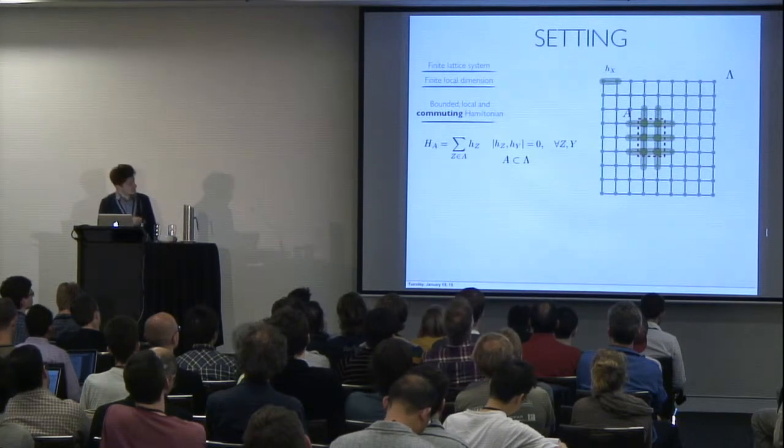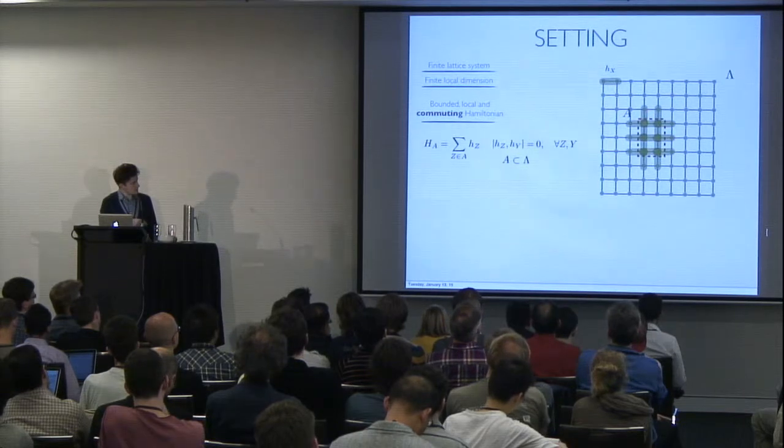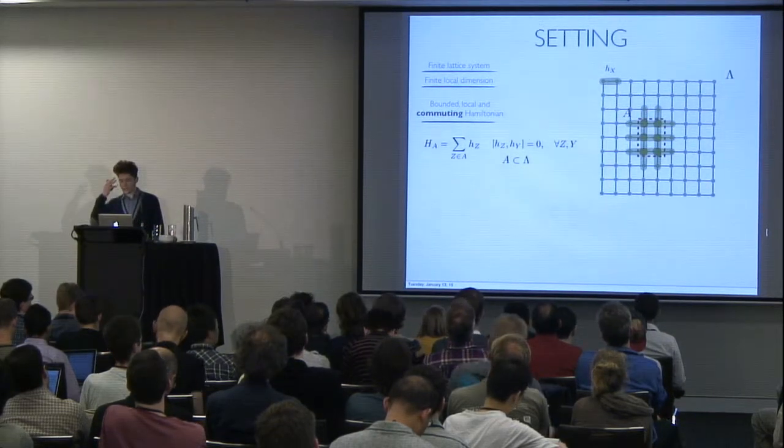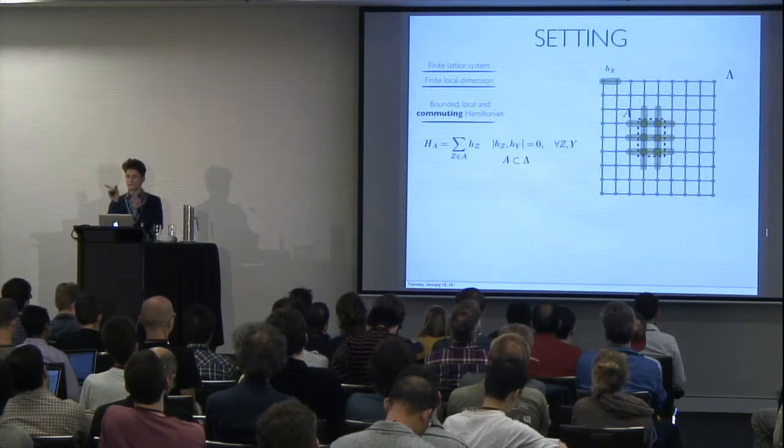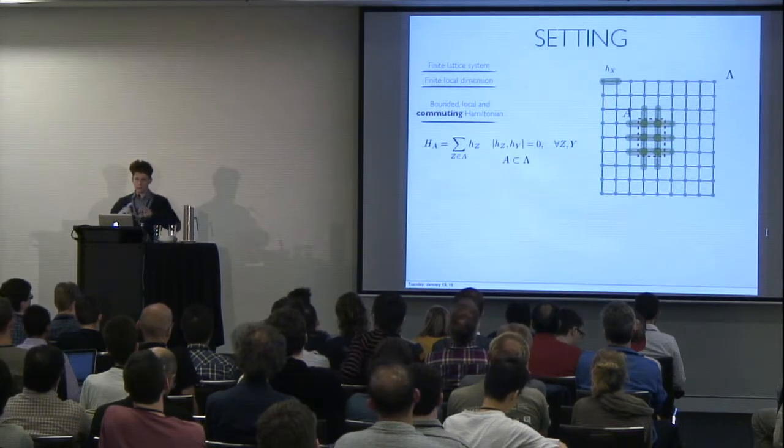And what will be important for the remainder of the talk is that when I talk about a subset of the lattice, you always have to keep in mind that I'm going to talk about the inner subset, and that there are always going to be terms of the Hamiltonians and of the Gibbs sampler that are going to be sticking out from the subset.